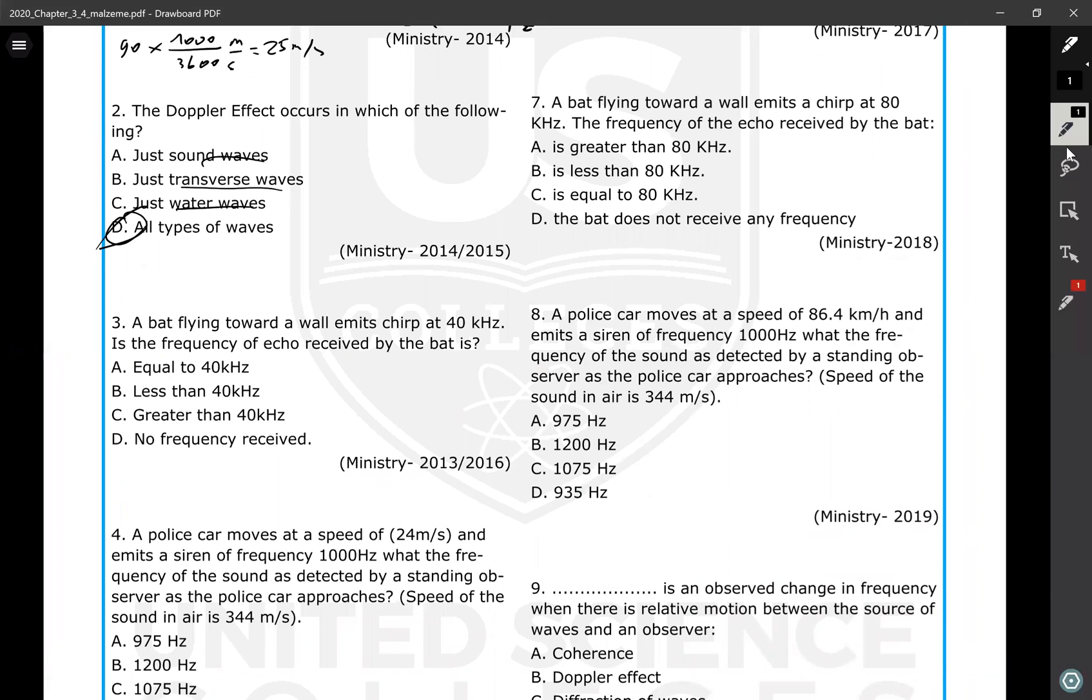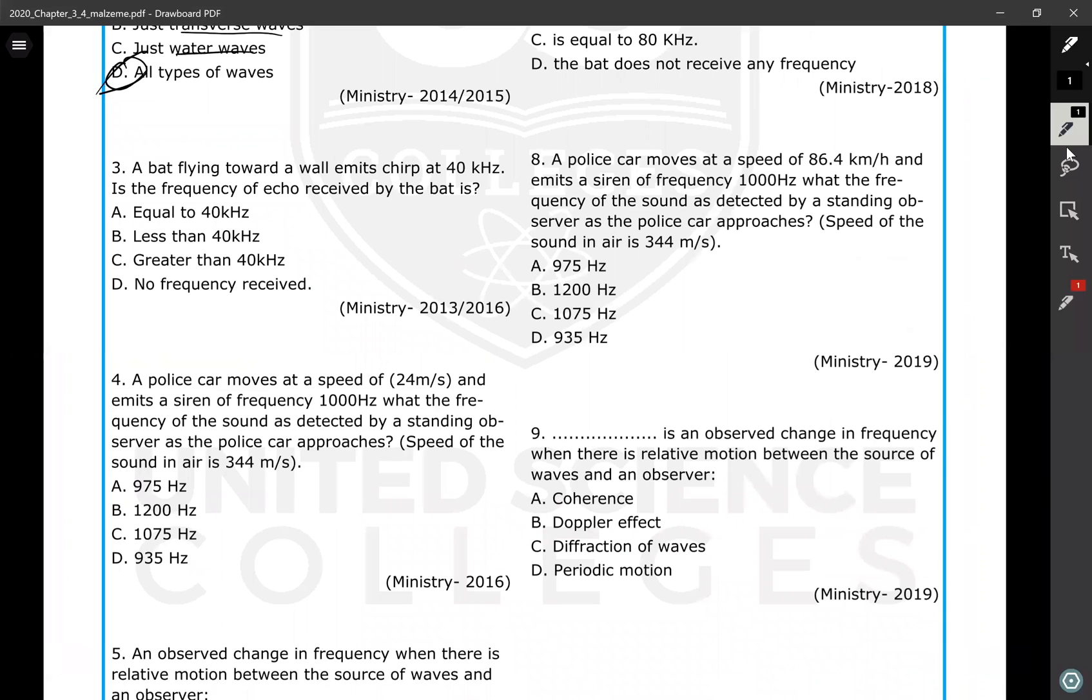A bat flying towards a wall emits a chirp at 40 kilohertz. What is the frequency detected by the bat? It's flying towards the wall, and here is the wall. Here is the bat sending the sound waves. The bat is first sending sound as the source, but the same bat detects the reflected waves - echo. It's approaching the source. On the way back, the wall is the source, and the bat is also the observer of its own sound because the bat is approaching to the wall. So the frequency detected by the bat this time must increase. It must be greater than 40 kilohertz.